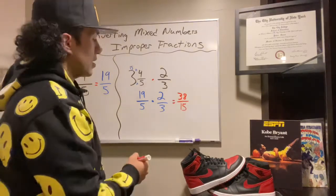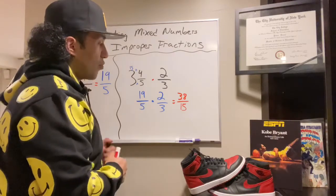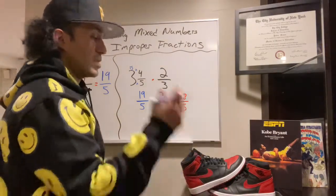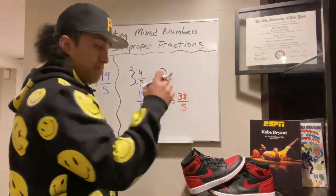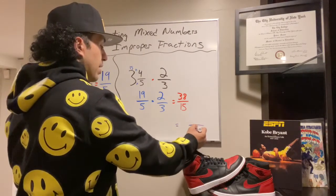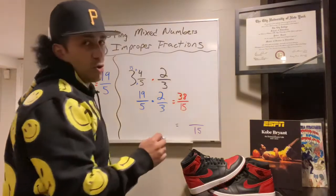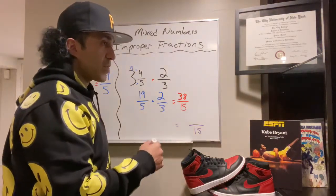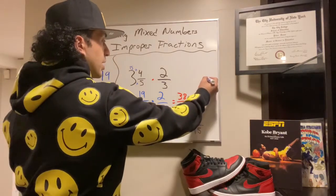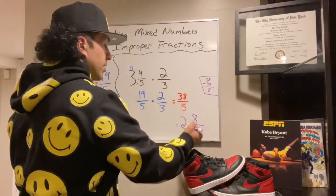Now we have 38 over 15, or 38-fifteenths. I could leave that as an improper fraction, but chances are they probably want me to convert that into a mixed number. I'm going to rewrite my fraction keeping the denominator of 15. I'll ask myself: how many times does 15 go into 38 before going over? 1 times 15 is 15, 2 times 15 is 30, so it's 2. Then 38 minus 30 is 8, so my numerator becomes the remainder, which is 8.